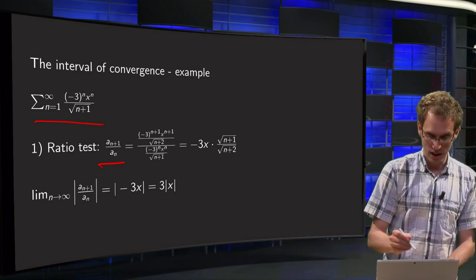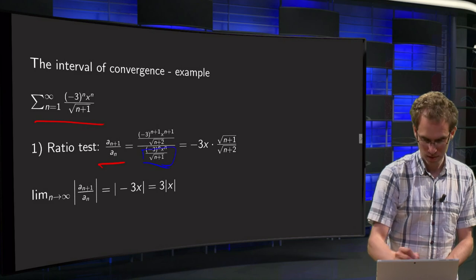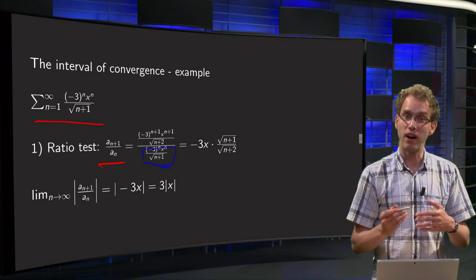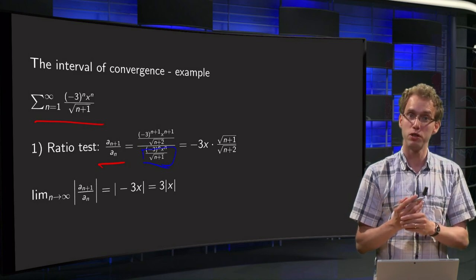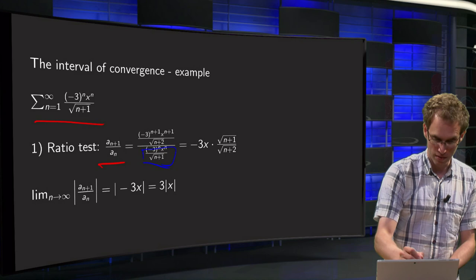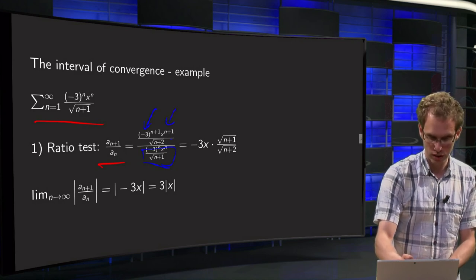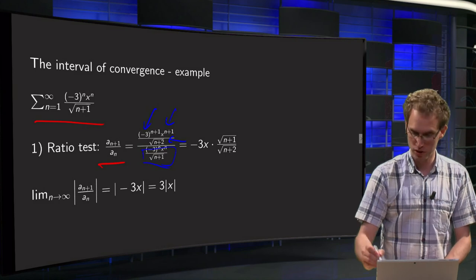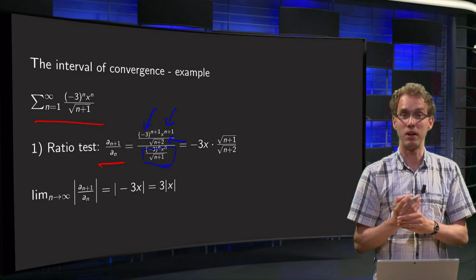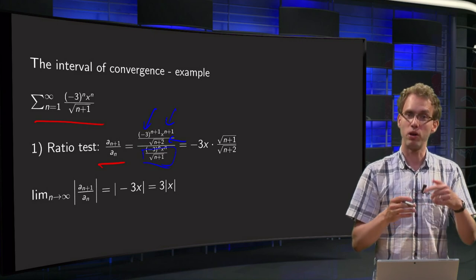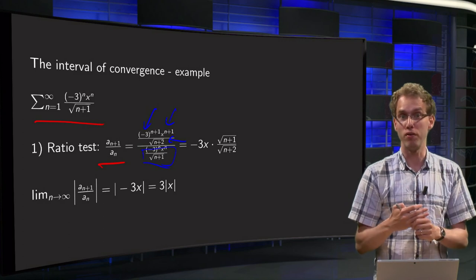The a_n is given here, and we find a_{n+1} by putting n+1 in the place of n. So we have minus 3 to the power n+1, x to the power n+1, and the square root of n+1+1 equals the square root of n+2. You get a lot of terms, but you can always simplify because in a power series, powers of x will always simplify.